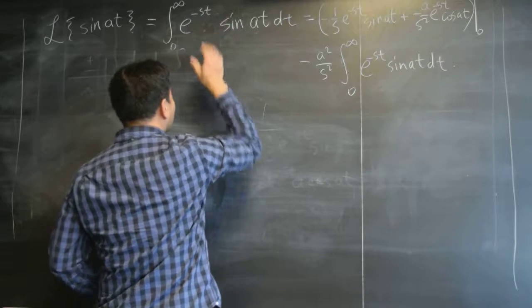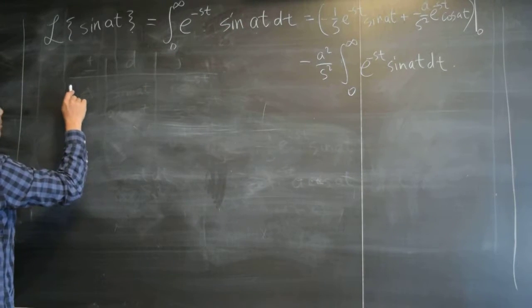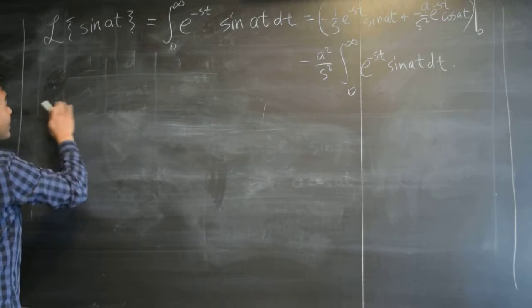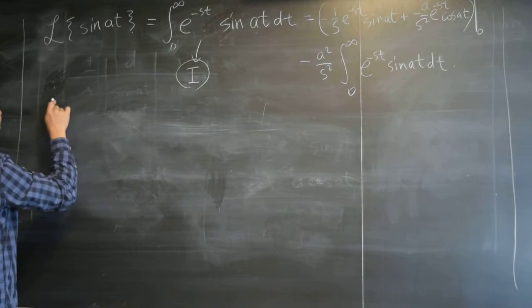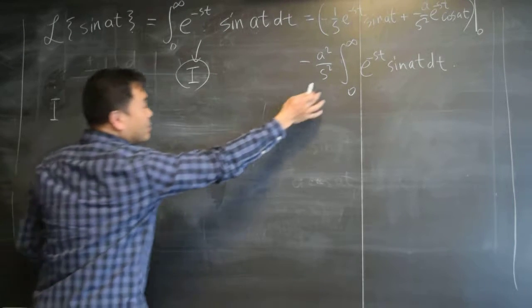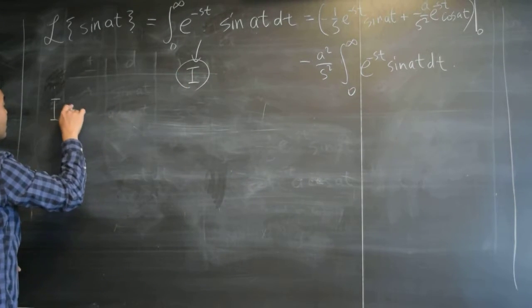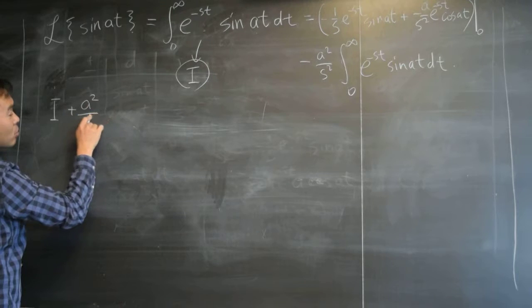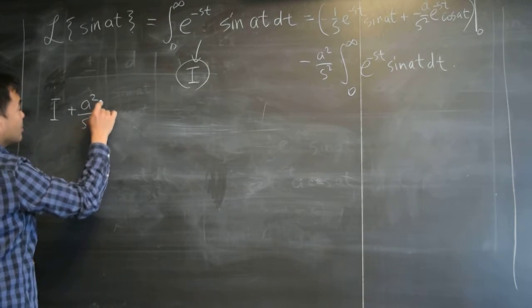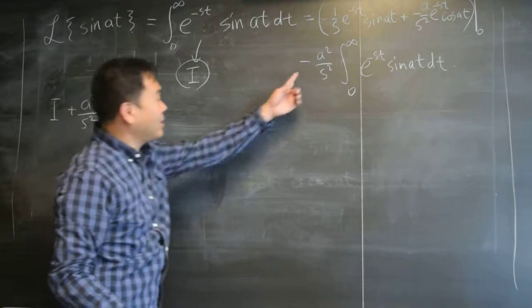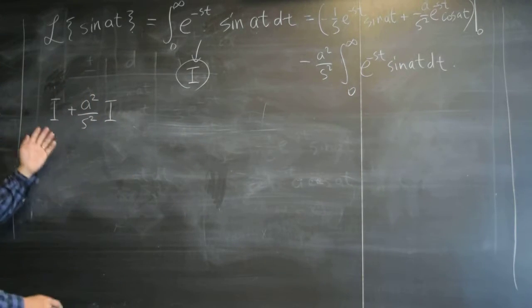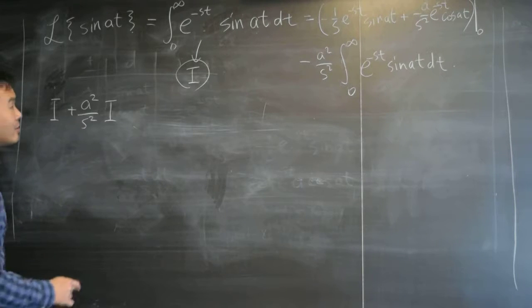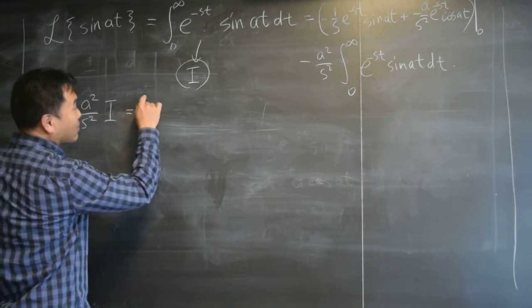And so you move this to the other side and you get the following. If I just call this as i, just as shorthand, okay. So it's i and then this thing moved to the other side is plus a squared over s squared times i, right. This is a, this thing times i. If I call this as i, that's the i, i for integral. That's what I have on the left side.